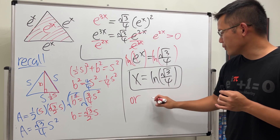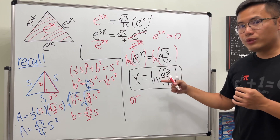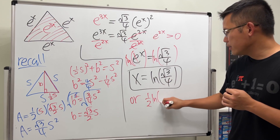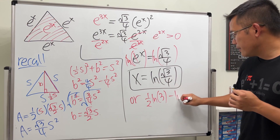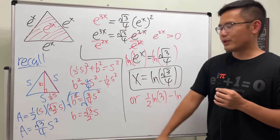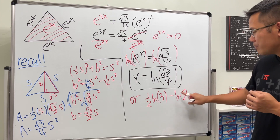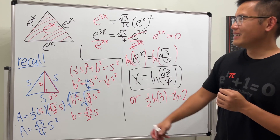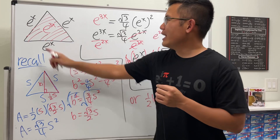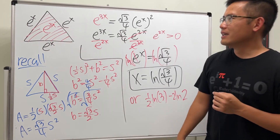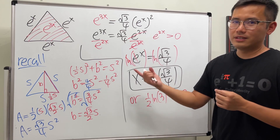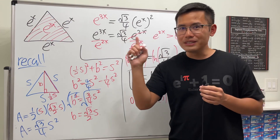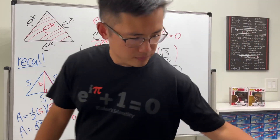If you want to simplify further: ln(√3/4) = (1/2)ln(3) − ln(4). Since 4 = 2², ln(4) = 2ln(2), so x = (1/2)ln(3) − 2ln(2). Either form is acceptable. I think this is a really cool problem — three e^x's on the sides and e^(3x) in the middle. Check out my other videos for similar questions!